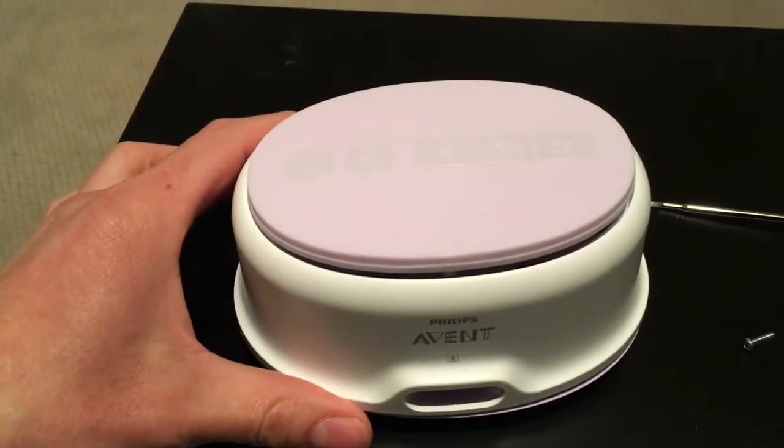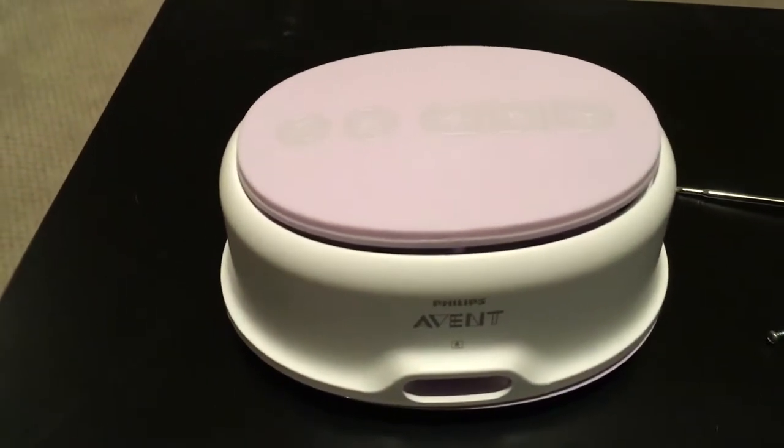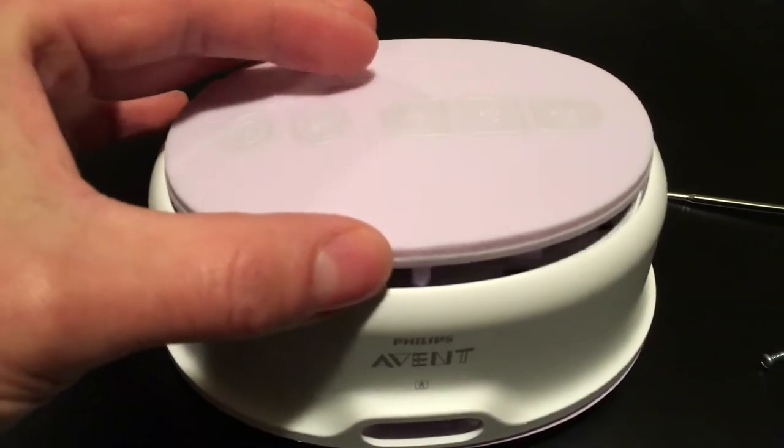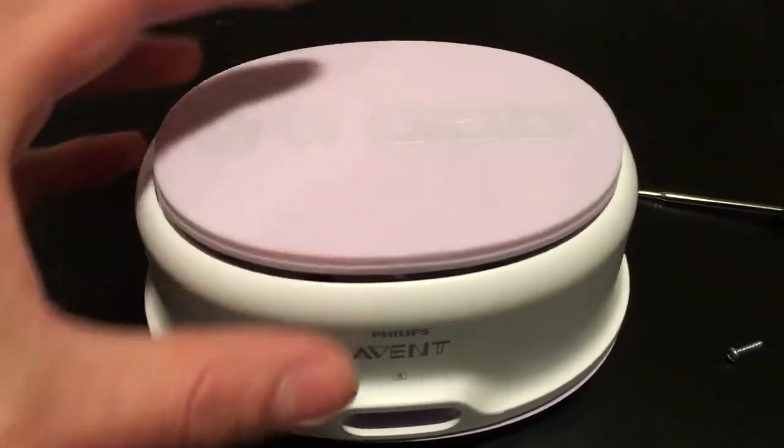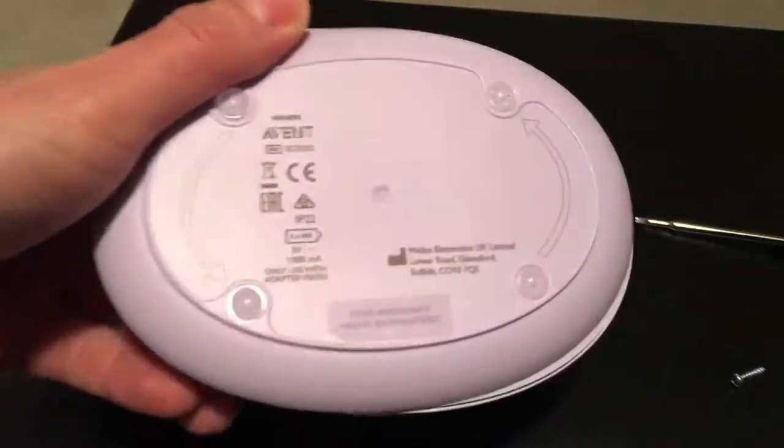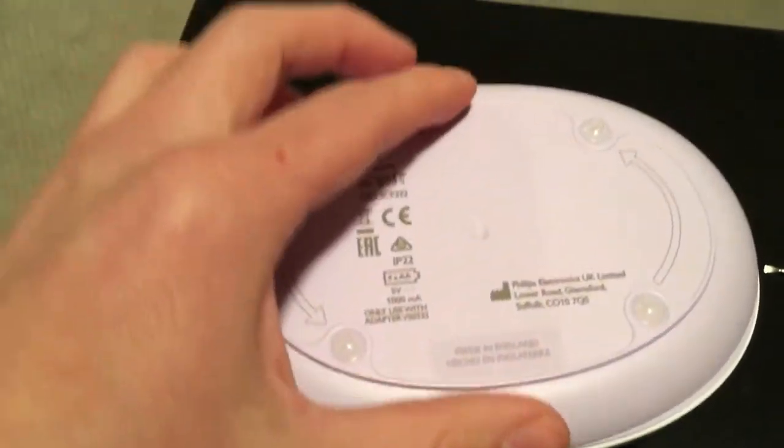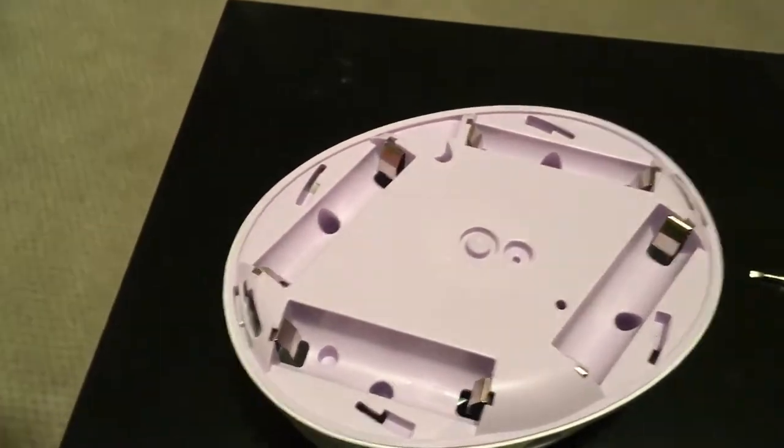First of all, in order to get to the actual pump and look at the innards, we have to take this top piece off, but before we do that I'll show you where to start. Simple enough, all you got to do is take this bottom piece, twist it, and that cap comes off.